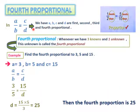For the proportional, in a over b equals c over d, we have a, b, c and d as our first, second, third and fourth proportional.